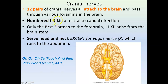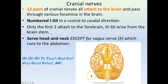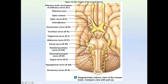They're numbered 1 through 12 in a rostral to caudal direction, so anteriorly to inferiorly. Only the first two attach to the forebrain; the rest come from the brain stem. You need to be able to label a diagram of your cranial nerves — name them by their number or by their name. You do not see the branches on the diagram.